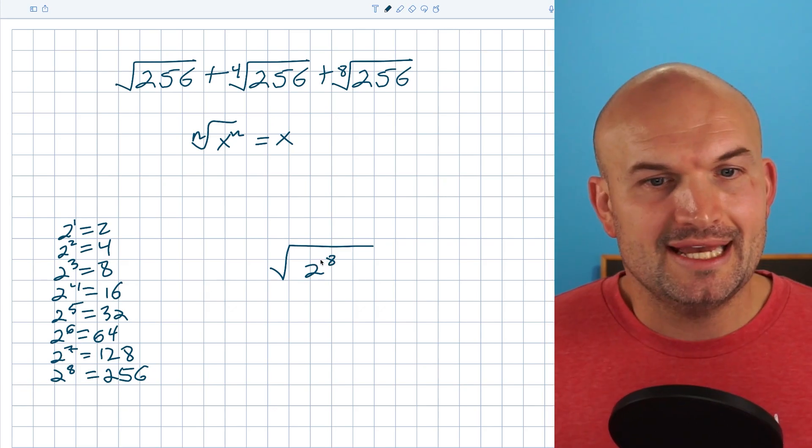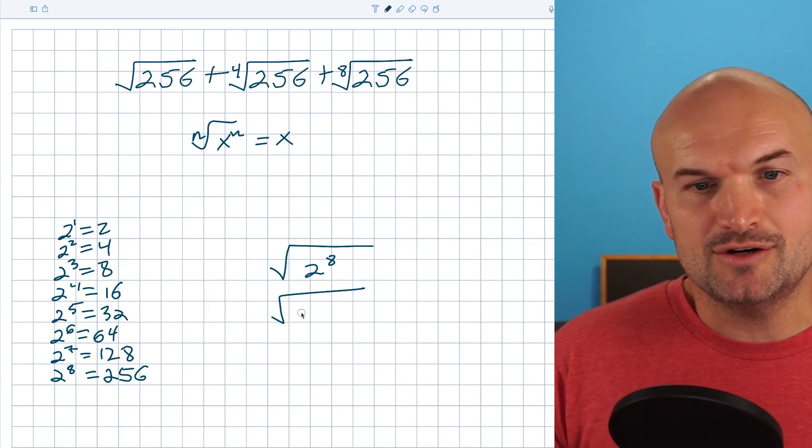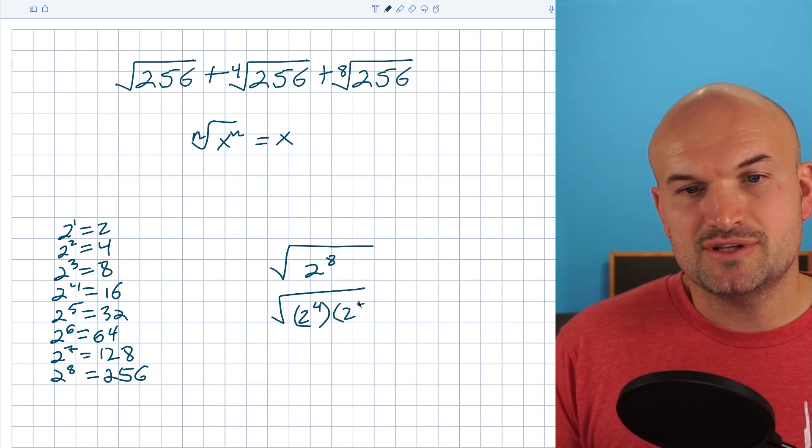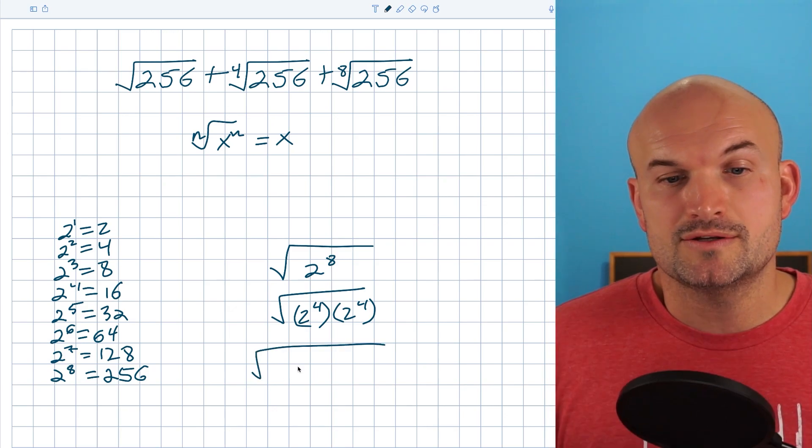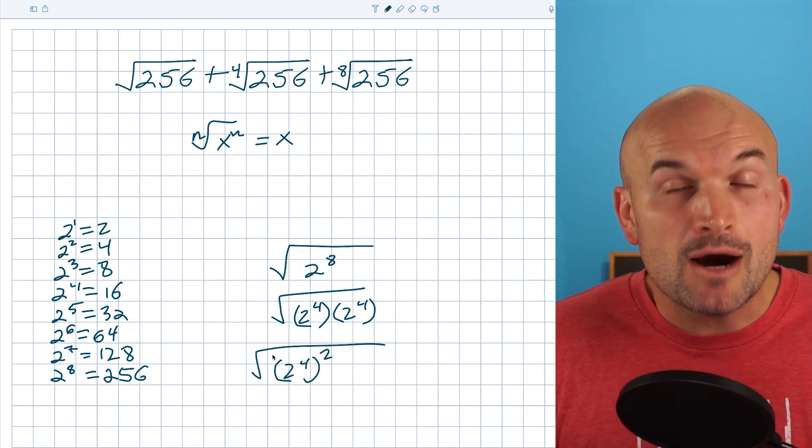So one thing I can do is I do recognize that I can rewrite two to the eighth as two to the fourth times a two to the fourth, right? Because what a two to the fourth times two to the fourth is two to the fourth squared. So that's two to the fourth squared. Now we have that squared number.